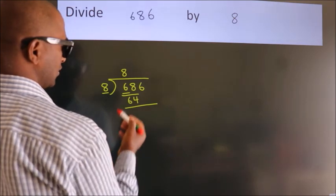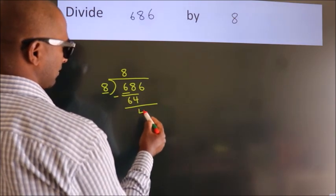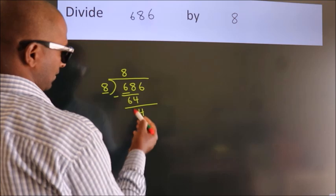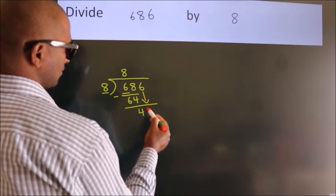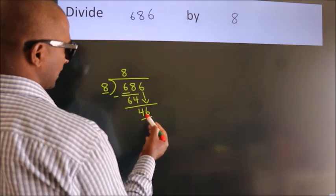Now we should subtract. We get 4. After this, bring down the next number, so 6 down. So, 46.